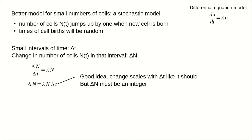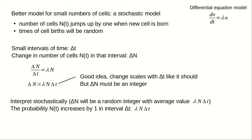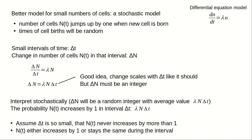One important criterion is that we need the number of cells to be an integer — delta n must be an integer. This expression is certainly not an integer, especially when delta t is small. To keep n an integer, we'll interpret this condition in a stochastic, or random, sense. Rather than n increasing exactly by this amount, it will increase by a random integer which on average will be this amount. To accomplish this, we let the probability that N of t increases by one during the interval delta t be lambda times n times delta t. We implicitly assume that delta t is sufficiently small so that N of t will never increase by more than one during the interval — it will either increase by one or stay at the same value.